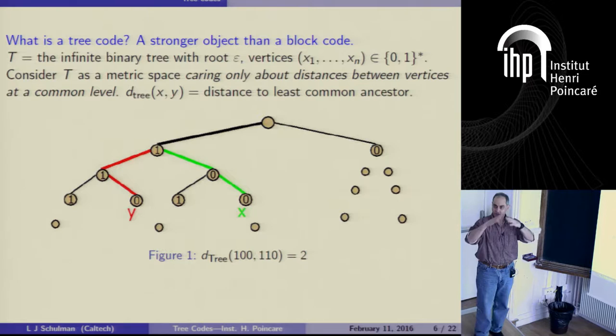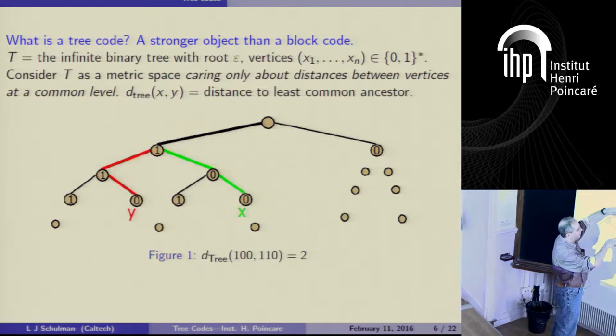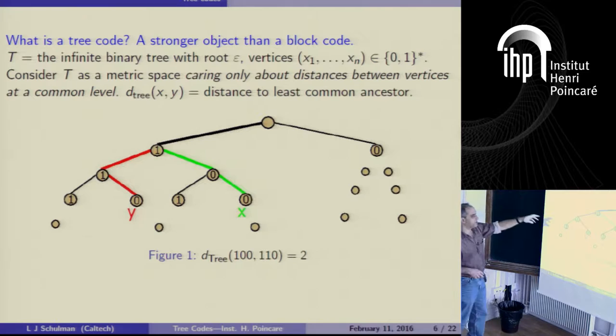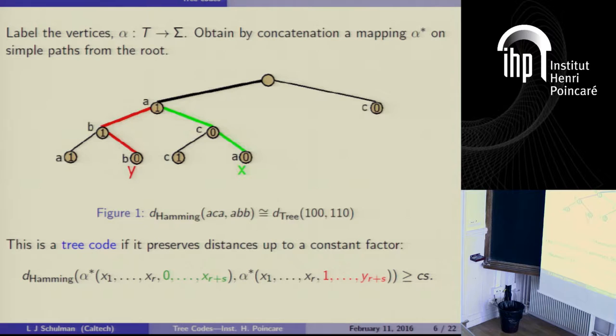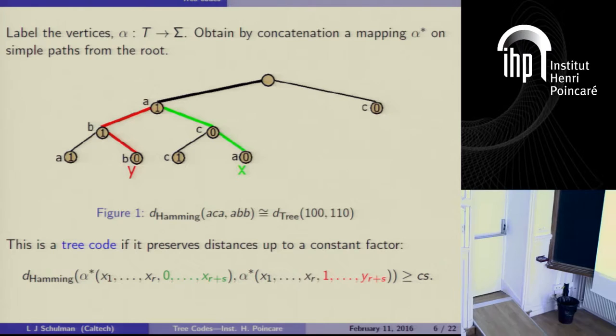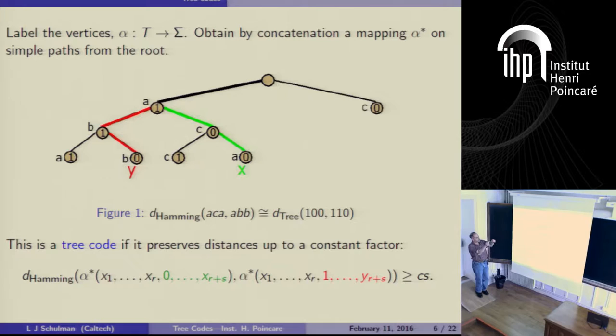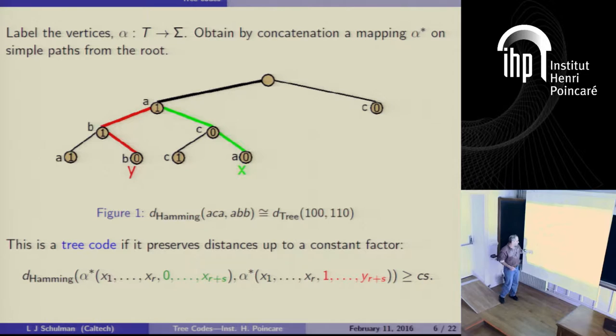The vertices are labeled by finite strings — zero if you go left, one if you go right, and so forth. We consider the tree as a metric space, but we only care about the distance between vertices at the same level. The distance is just the tree distance — the distance from X to Y is the distance to their least common ancestor. We label every vertex except the root with a label from some finite alphabet. Taking the concatenation of characters as you run down a path gives you a word, and we're interested in the Hamming distance.